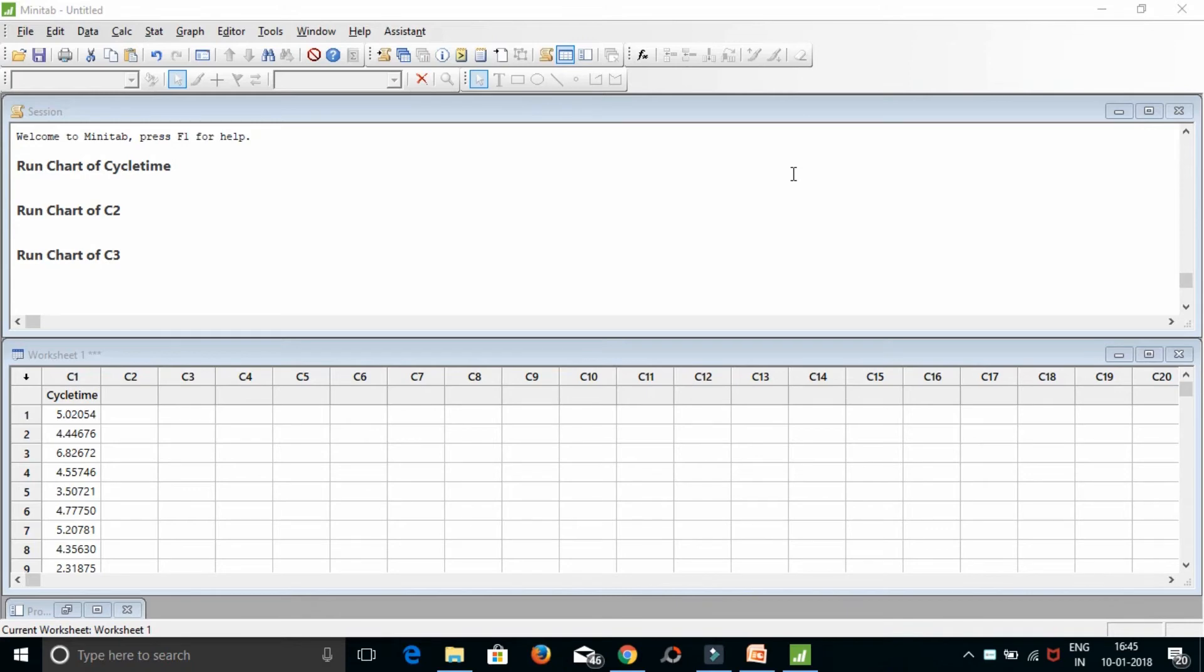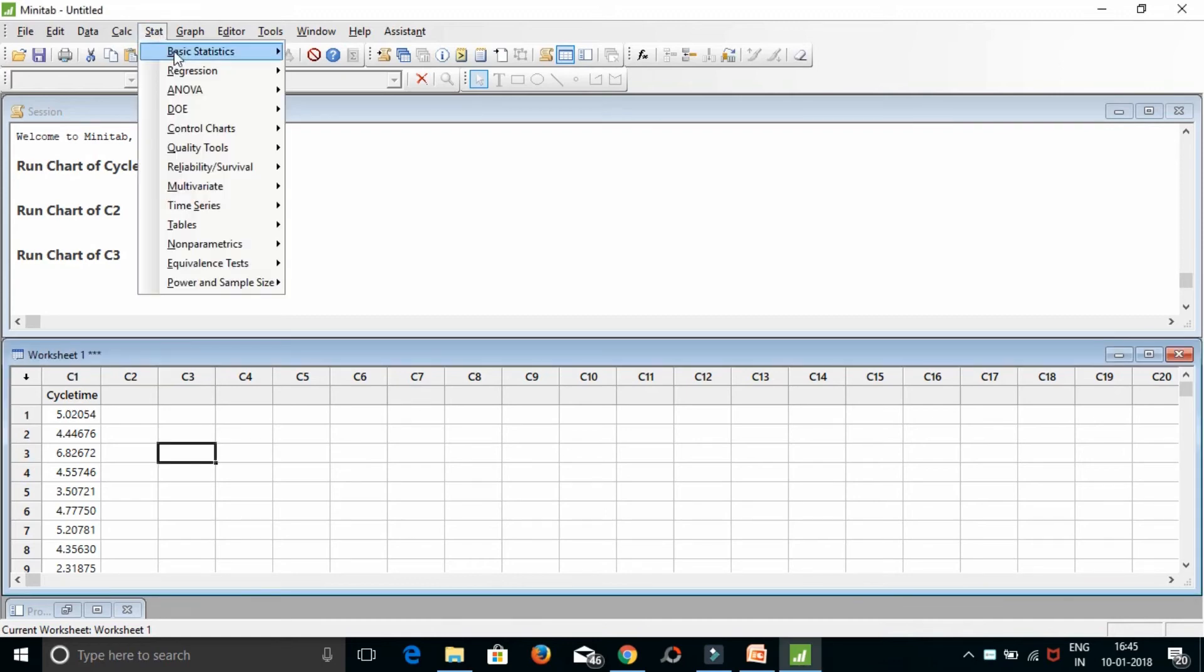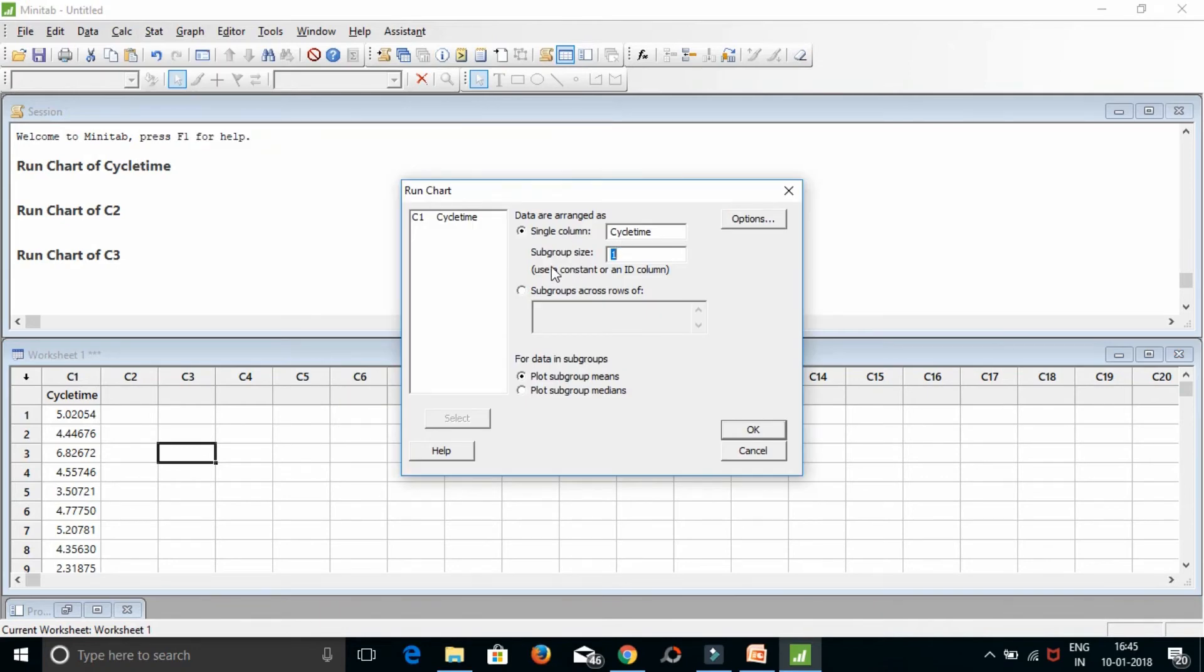Let us see how to create a run chart in Minitab. I have already pasted cycle time data in column C1. We want to check whether there are any special causes present in this data before we go ahead and do data analysis. We will go to Stat, Quality Tools and Run Chart. In single column select cycle time and in subgroup size enter 1 and click OK.